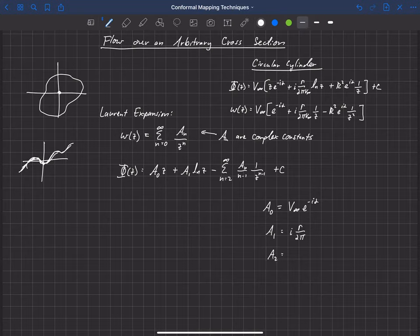And then the second term, a_2, notice we've got this minus sign here in this phi equation. And so it's going to actually be minus R squared e to the i alpha. So this defines a circular cylinder.